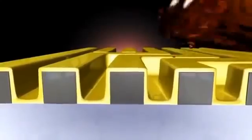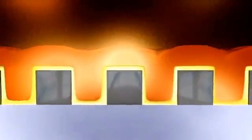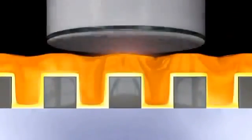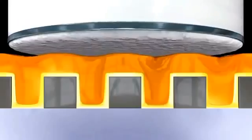Before the copper is poured into the trenches for the interconnects, a barrier layer is applied. It helps to avoid short circuits and guarantees reliability. The trenches are then filled with copper, and finally the excess copper is ground down to the edges of the trenches — this insulates each interconnect from the others.